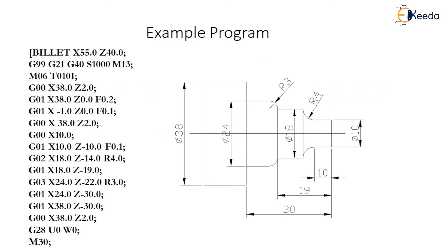So let's start with the actual example. This is an example which is basically designed in the first phase — it only follows the profile. So follow the profile path. X is the simple path program. First I have to select the billet which is given in the condition. The billet position is already known. Then M06, G00, G99, G21, G15 invested on M15 — you can write it this way also.